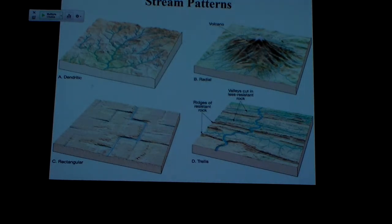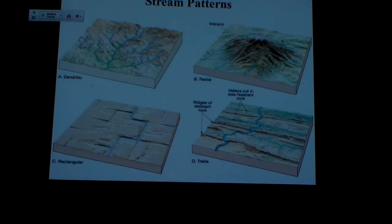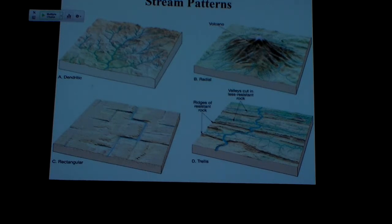Streams have different patterns to them beyond the big end members of braided and meandering. If you pick up a map, you'd see that streams form patterns. One thing we see is just a dendritic pattern — that simply means everything's about the same, there's no single controlling factor. One way is as good as another, so it takes this random branching pattern as it collects water.